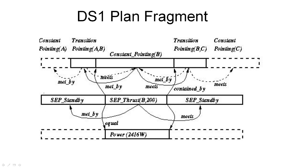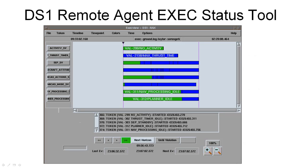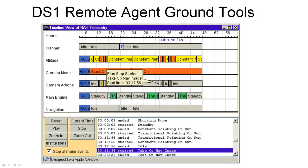A Deep Space One plan is in the form of timelines of different instruments showing when they are turned on and off, with various time constraints and other constraints applying between elements of the plan. A Java applet tool was provided to allow observers to watch the remote agent experiments in real time while it was operating, showing the status of the execution system onboard the spacecraft.